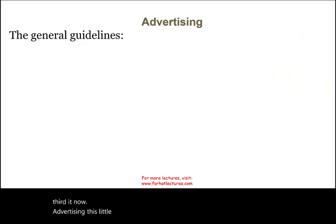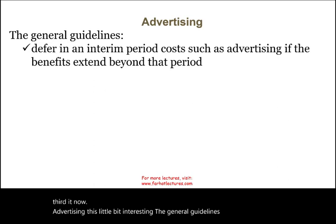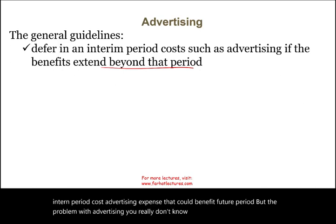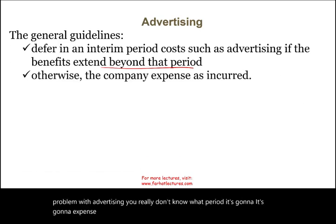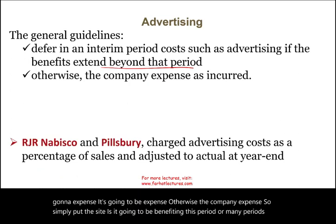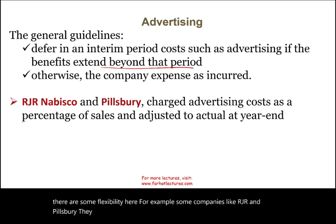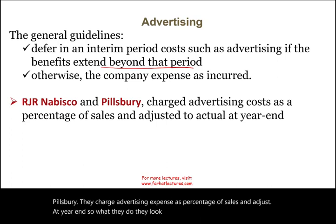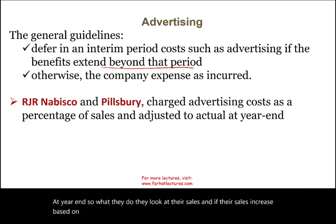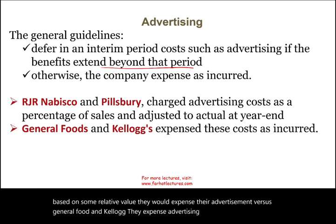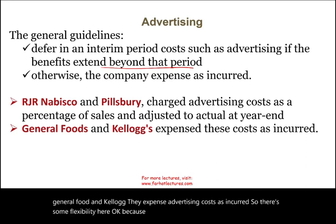Advertising is interesting. The general guideline is to defer in an interim period any advertising expense that could benefit future periods, but the problem is you really don't know what period it will benefit. There's flexibility here — for example, some companies like RJR and Pillsbury charge advertising expense as a percentage of sales and adjust at year end, while General Foods and Kellogg expense advertising costs as incurred. There's flexibility because you don't know the exact value of advertising.